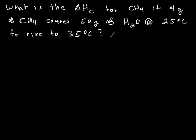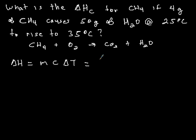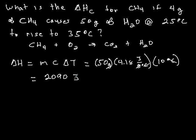So what is the enthalpy of combustion for methane if 4 grams of methane causes 50 grams of water at 25°C to rise to 35°C? And so the enthalpy change is going to be mcΔT. And so again, the thing that is absorbing the heat in this case is the water. So this data is for the water. The mass of the water would be 50 grams. The heat capacity of water is 4.18 joules per gram degrees Celsius. And the ΔT of the water in this case is 10 degrees Celsius. So canceling out units and punching into your calculator, you get a ΔH of 2090 joules.